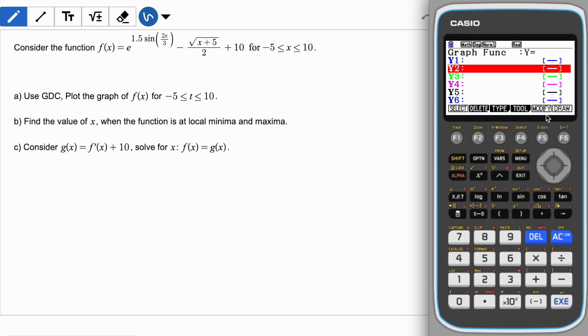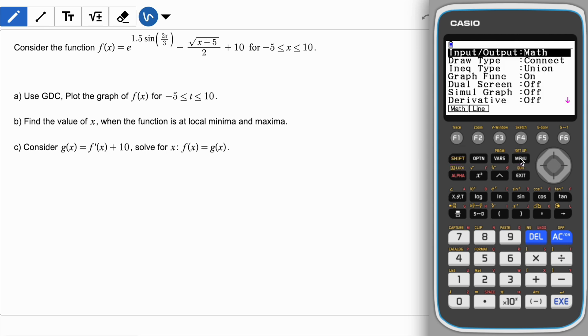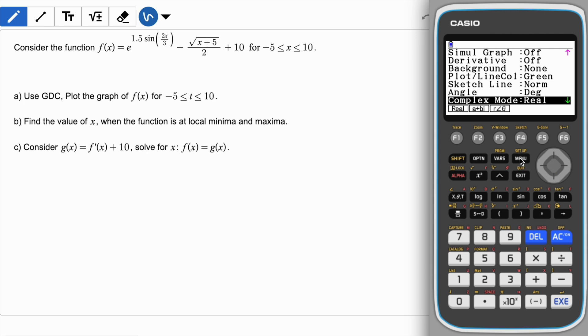Your window settings we can explore when you have a graph. After that, if you think there are certain settings which are not on, you can always click shift and setup. If you see there are options for you: input is math, draw type connect which is good, graph function on, dual screen no, derivatives off, background none. If you keep going, angle you might need to change into degree or radian depending on the question. Coordinates has to be on, grid you may turn it on or just keep it on line, axis you can click on scale or on, and label which is on. Display should be just normal.